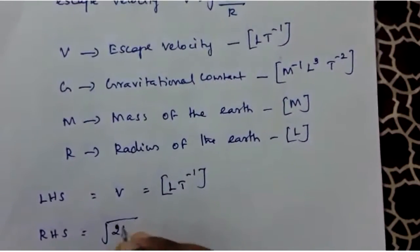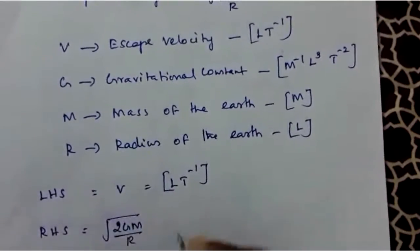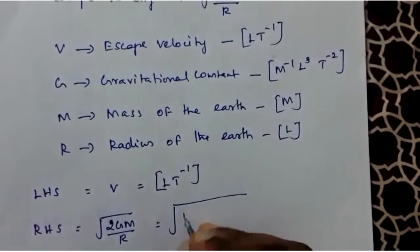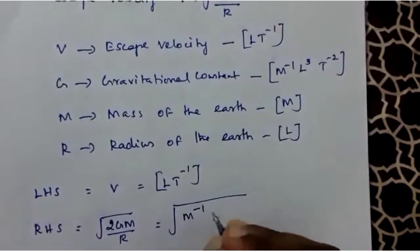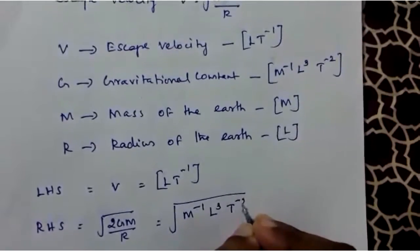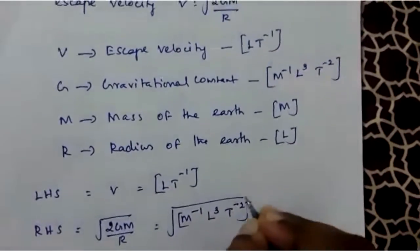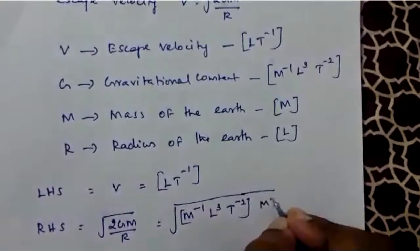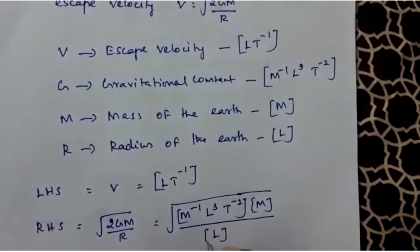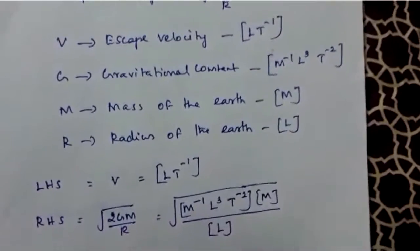root of 2GM by R. 2 has no dimension since it is a constant. For G it is [M^-1 L^3 T^-2]. For M it is [M], for R it is [L]. Now, everything is within the root.